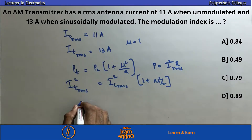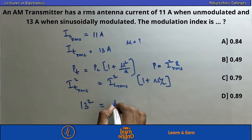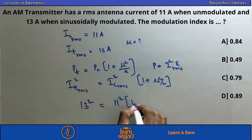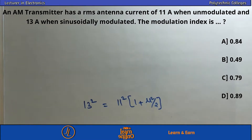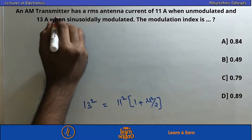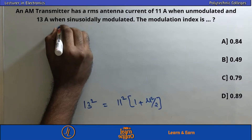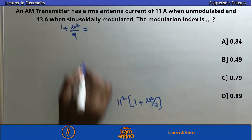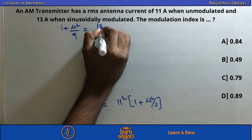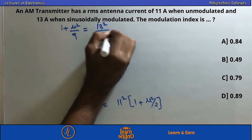Substituting the values: I_T(RMS) = 13A and I_C(RMS) = 11A. So 13² = 11² × (1 + μ²/2). Rearranging: μ²/2 = (13²/11²) − 1.